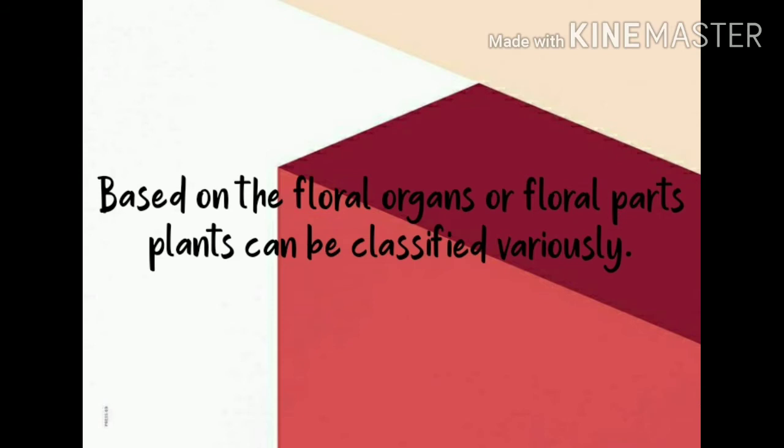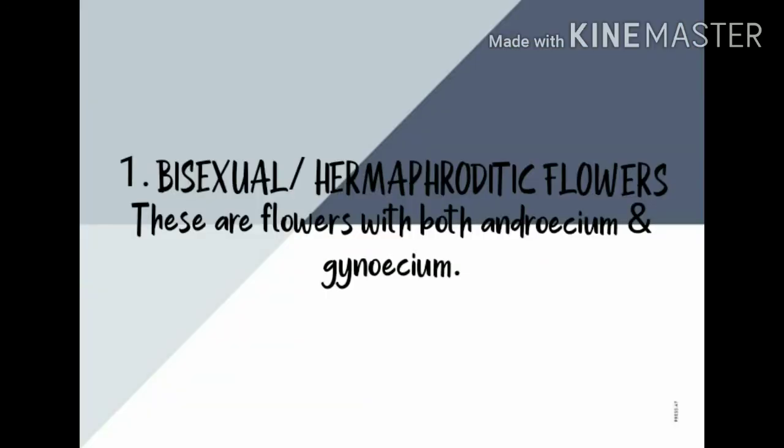Just as every other organism has organs, a flower too has organs, and according to those organs a flower possesses, flowers can be divided in various ways. According to this, flowers can be divided majorly into four types. The first one is bisexual or hermaphroditic flowers. 'Bi' means two, and hermaphroditic — you are familiar with this word from biology.